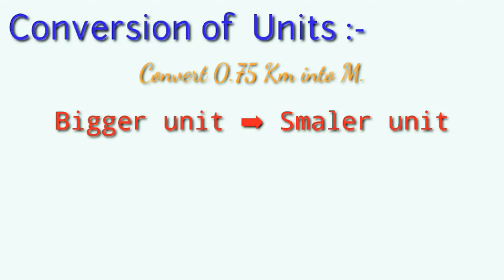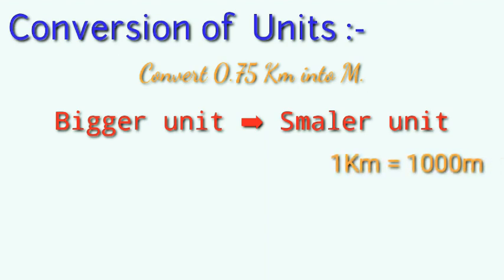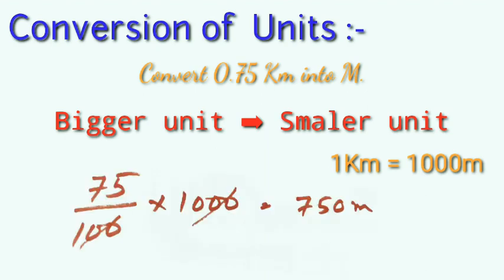Now, see that in 1 kilometer, how many meters are there? Because we have to convert it into meters. 1 kilometer equals 1000 meters, so multiply by 1000. First, remove the decimal: 75 over 100, multiply by 1000. Two zeros can be cancelled out and the final answer will be 750 meters.